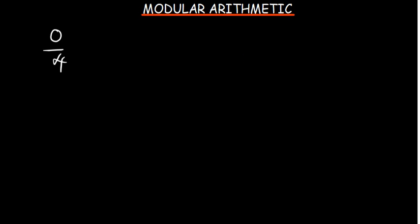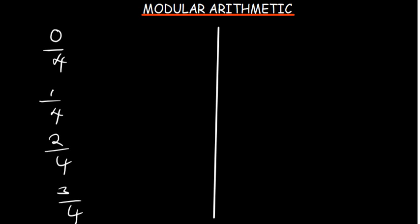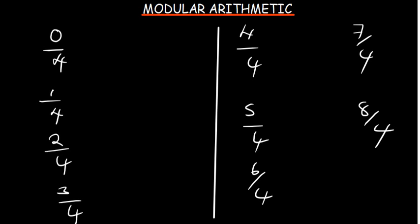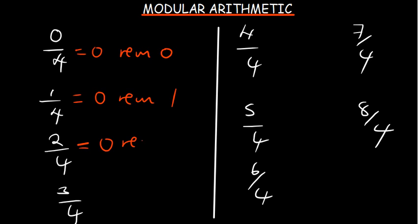Let's try to observe a trend. Let's say you're trying to divide 0 by 4, then 1 by 4, 2 by 4, 3 by 4, then 4 over 4, then 5 over 4, 6 over 4, 7 over 4, and 8 over 4. So 0 divided by 4 is 0 remainder 0; 1 divided by 4 is 0 remainder 1; 2 divided by 4 is 0 remainder 2; and 3 divided by 4 gives remainder 3.